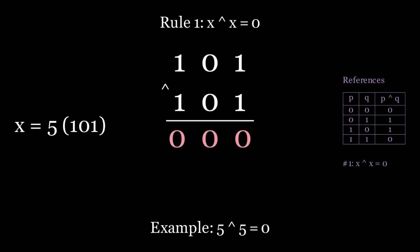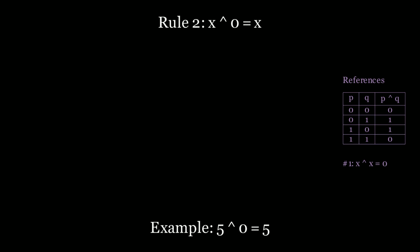Let's keep track of these rules on the right hand side in the references and we'll come back to them later in the problem. Now let's look at the next rule. So rule number 2 is X XOR 0 is equal to X. So any number XOR 0 is equal to itself. Let's look at 5 again.